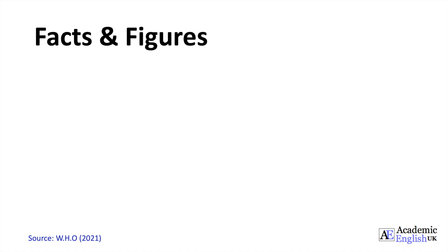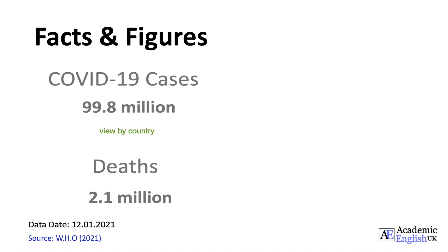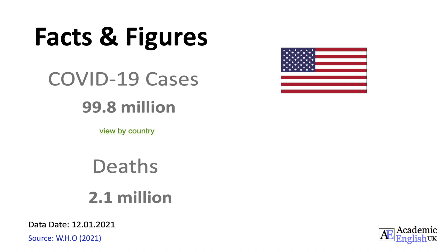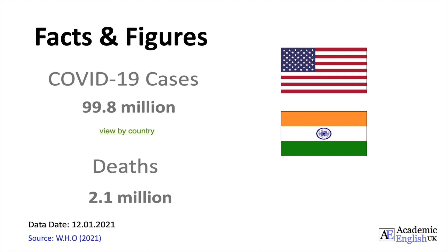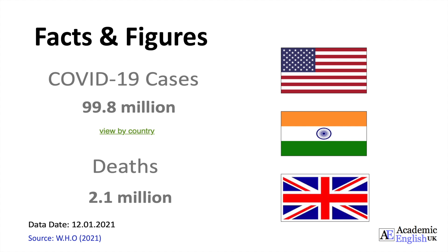According to the World Health Organization, from the second week in January 2021, there have been 99.8 million recorded COVID-19 cases and over 2.1 million COVID-19-related deaths worldwide. The figures show that the United States have the highest number of recorded cases of 26.3 million and 421,000 COVID-related deaths, followed by India in second place with 10.7 million recorded cases and 154,000 COVID-19-related deaths. The UK is in fifth place with 3.6 million confirmed cases and just over 100,000 COVID-19-related deaths.